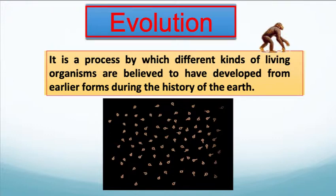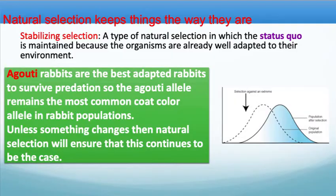Evolution is a process by which different kinds of living organisms are believed to have developed from earlier forms during the history of the earth. Natural selection keeps things the way they are using stabilizing selection — a type of natural selection in which the status quo is maintained because the organisms are already adapted to their environment. The brown rabbits are the best adapted to survive predation, so the brown allele remains the most common coat color allele, and unless something changes, natural selection will ensure this continues.